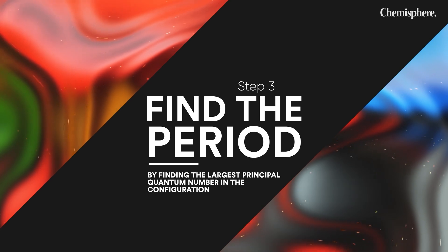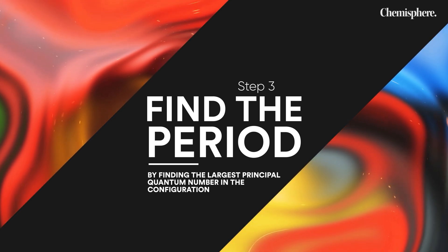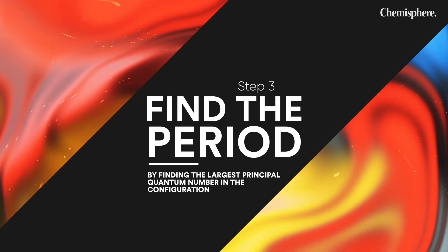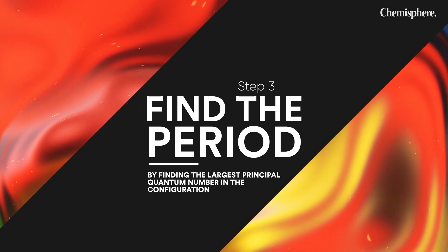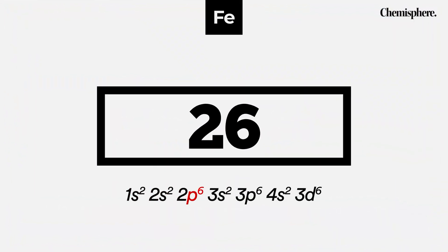Once we have done that, we can also find the period — what period the element lies in. To find the period, just look for the largest principal quantum number, or the n value, of that configuration. Let's say we are having iron. In iron, we see that the largest principal quantum number comes out to be 4. There are other values like 1, 2 and 3, but 4 is the largest because there is an electron which lies in 4s. So that clearly means 4 must be the period number of that element. So atomic number 26 lies in the fourth period.